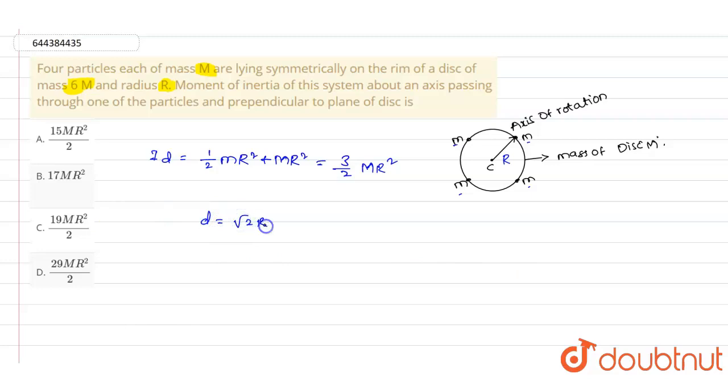Distance d equals √2R, and one of the particles is at distance 2R only, which is very less compared to the actual distance between particles.